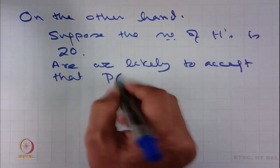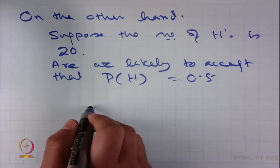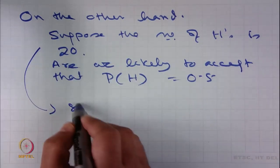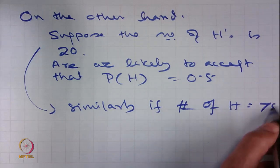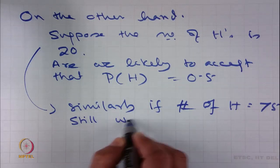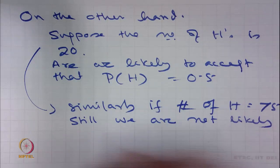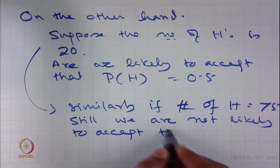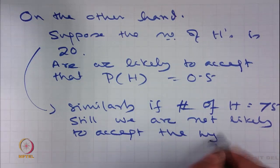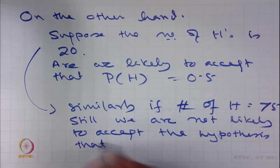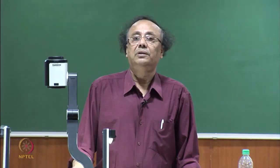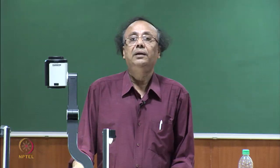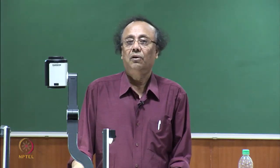Similarly, if the number of heads is equal to say 75, we are not likely to accept the hypothesis that probability of a head is equal to 0.5. So testing of hypothesis is all about designing a scheme such that based on the sample evidence, sometimes we can accept the hypothesis or we reject the hypothesis.